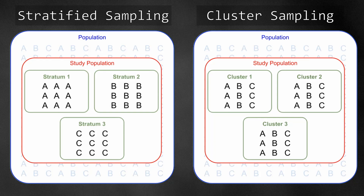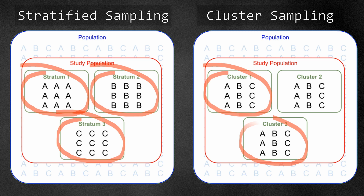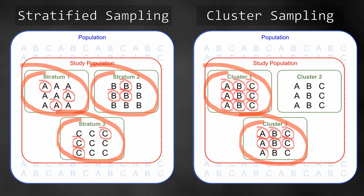In terms of which groups are included in data collection, stratified sampling makes use of all strata, while cluster sampling randomly selects only some of the clusters. In terms of which sampling units are included, stratified sampling selects only random sampling units from each stratum, while cluster sampling makes use of all sampling units within each selected cluster.